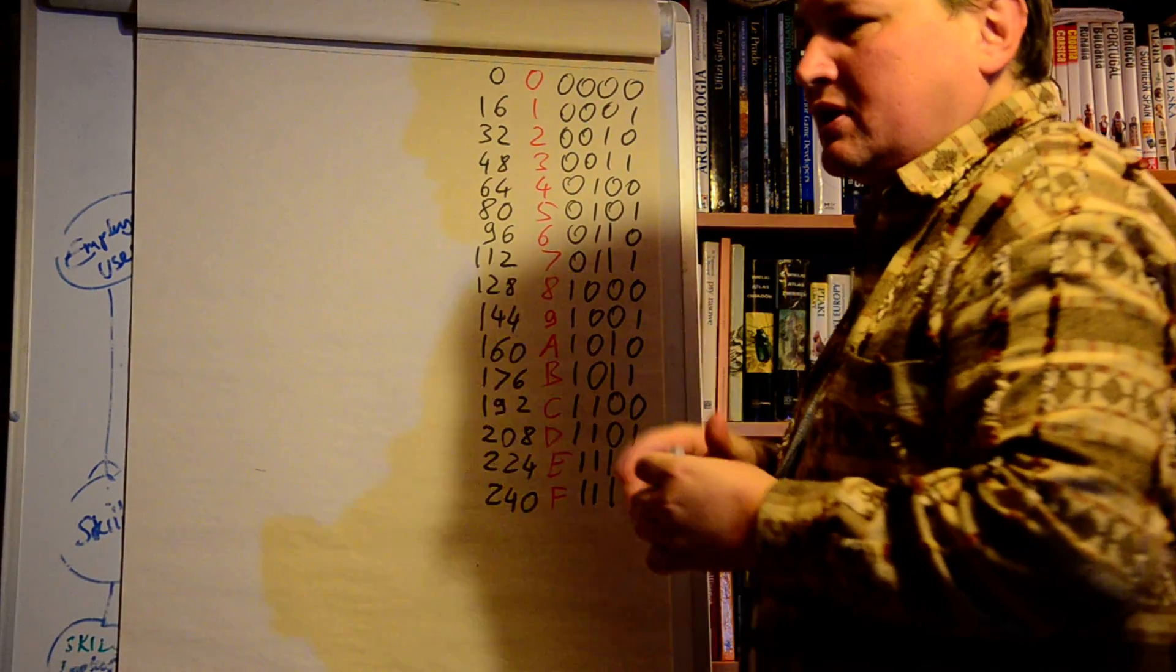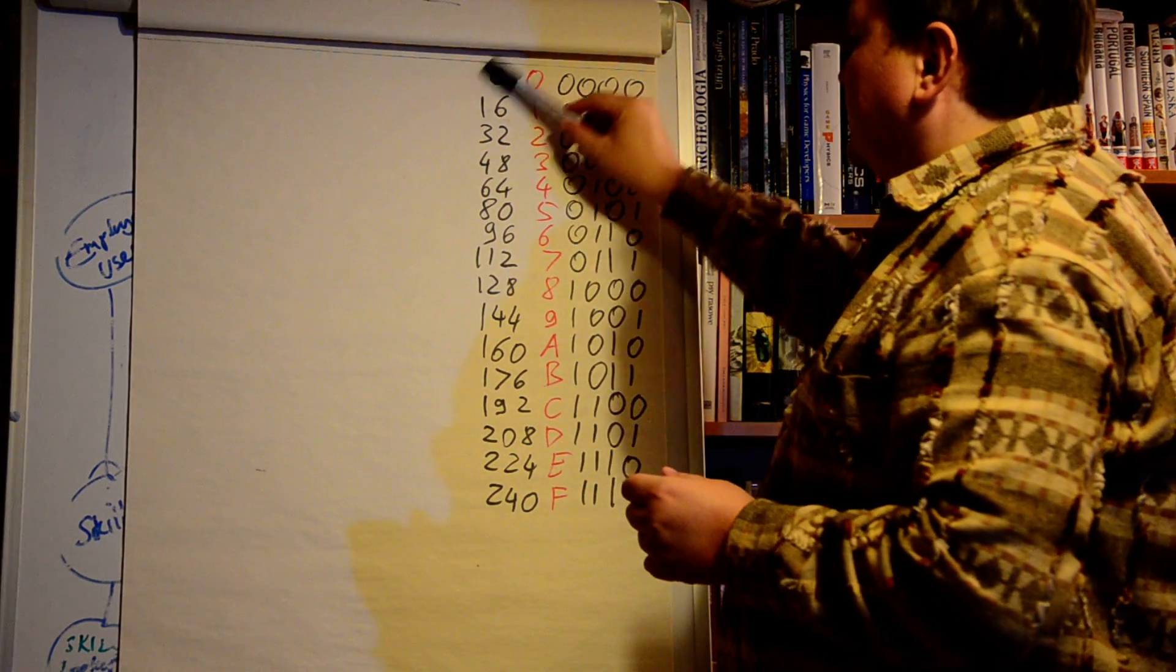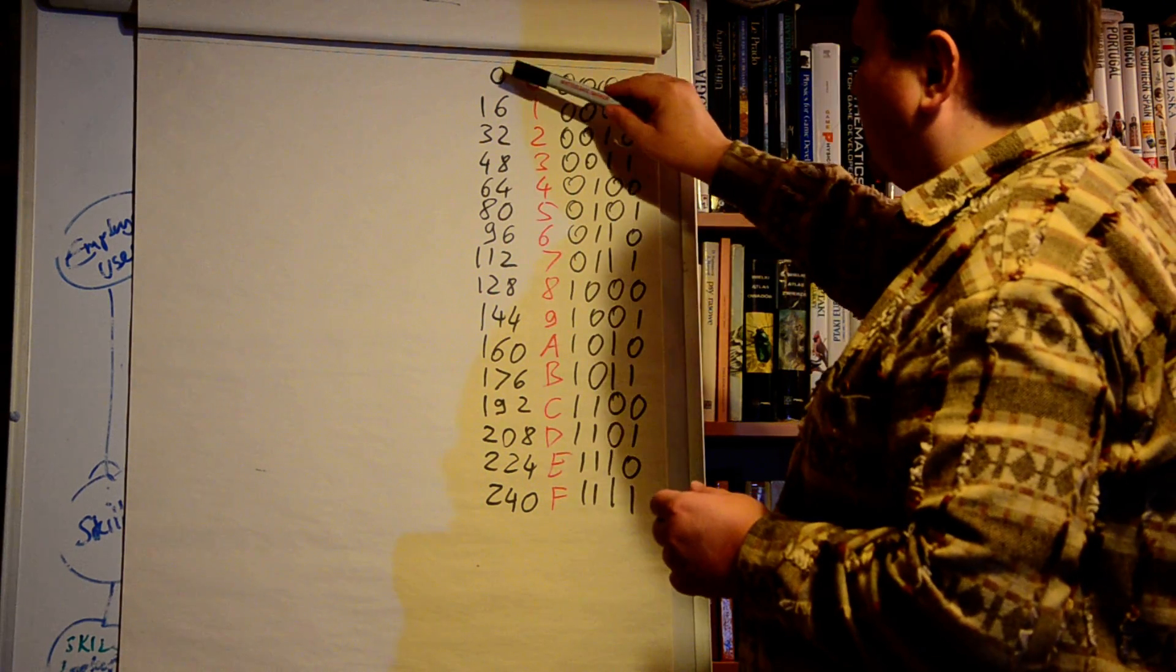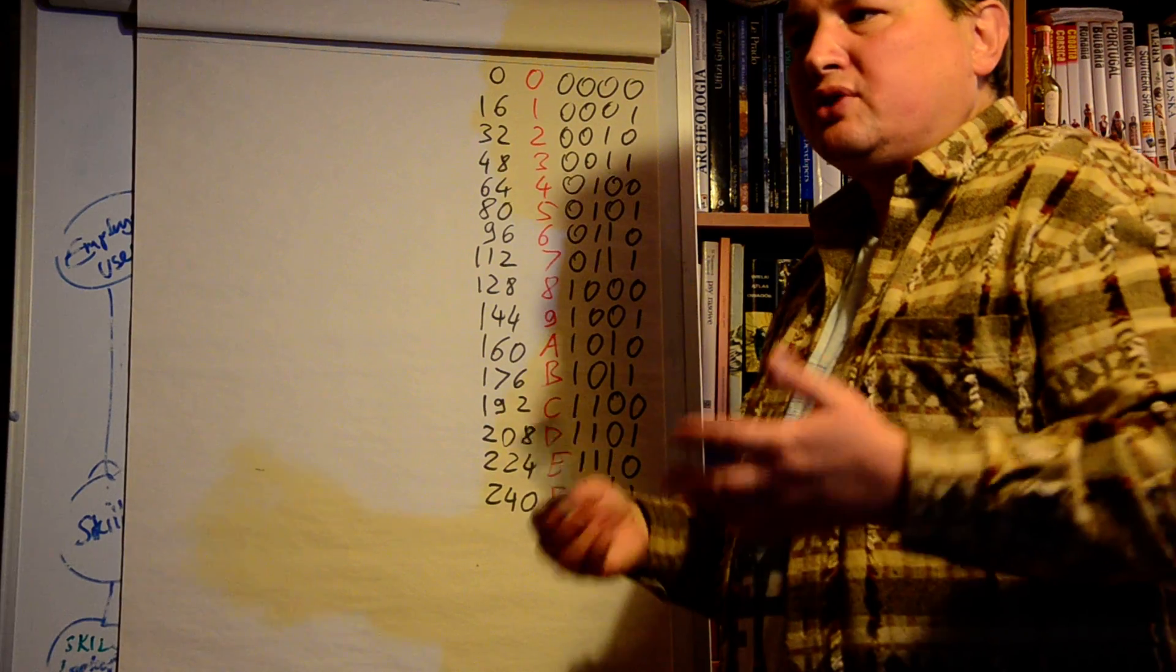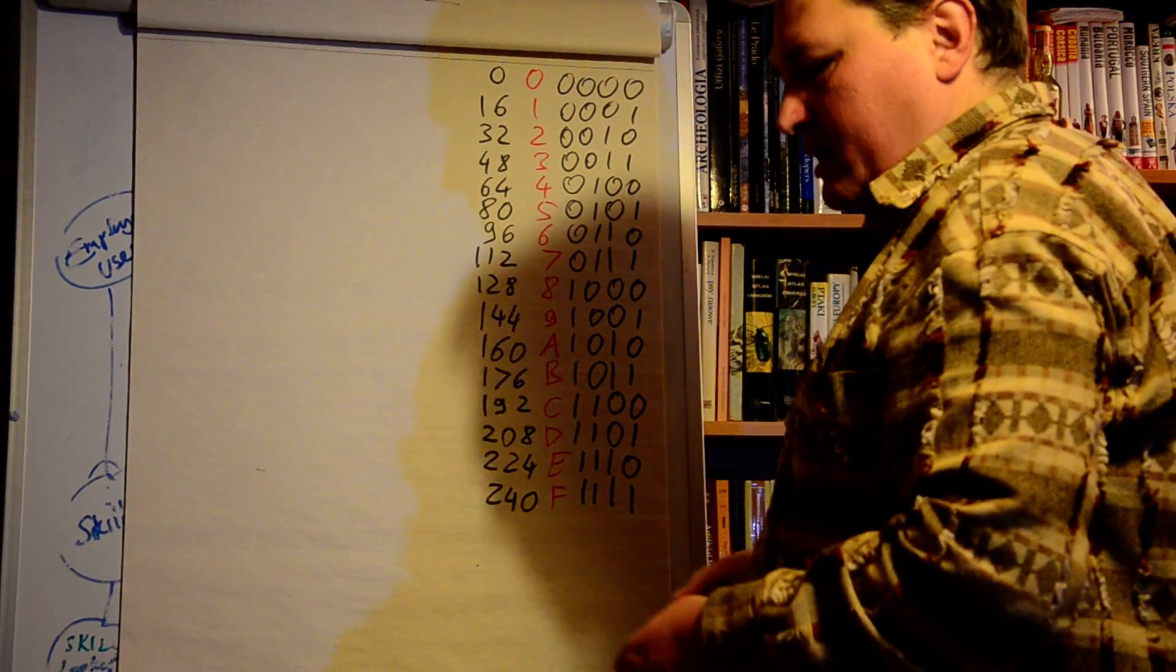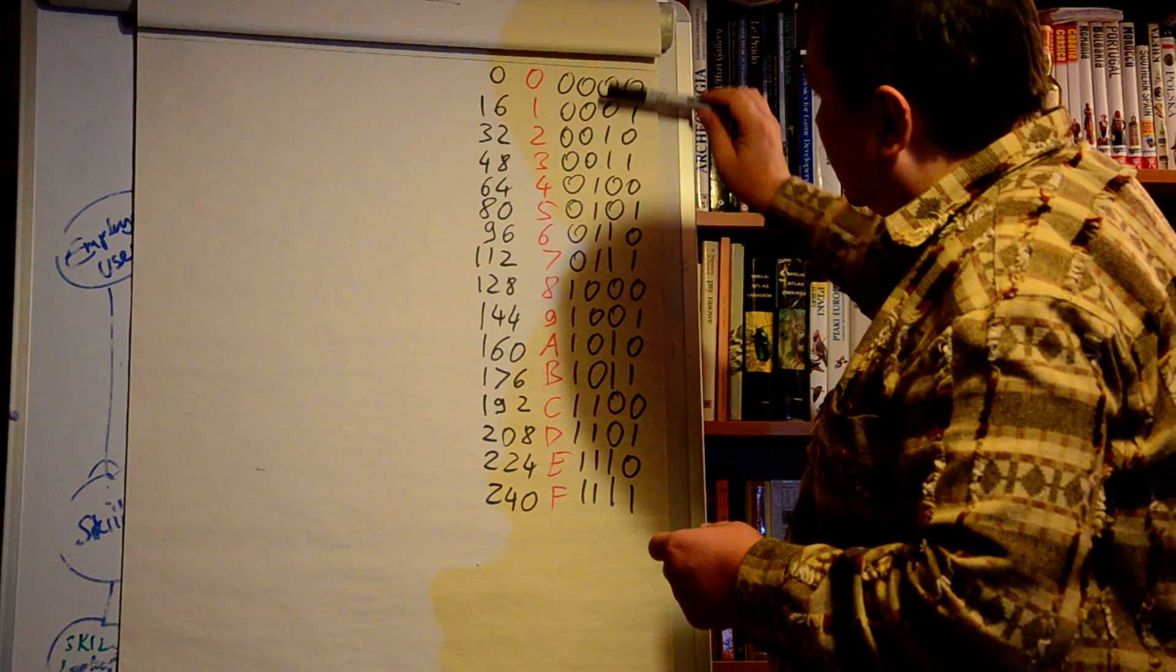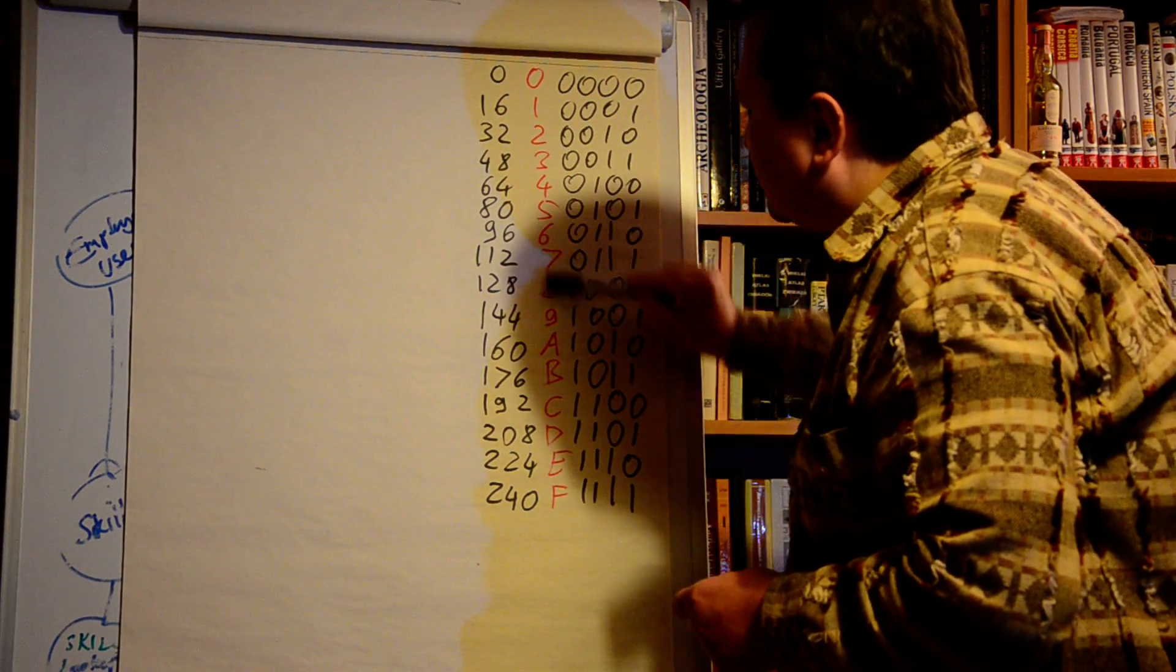What I have prepared here to make the task a little bit easy: this is the times table for 16, so these are multiplications of 16 which we will use to convert decimal numbers to hexadecimal numbers, and I also created here a table showing the binary representation of each hexadecimal digit.